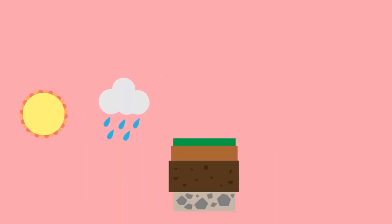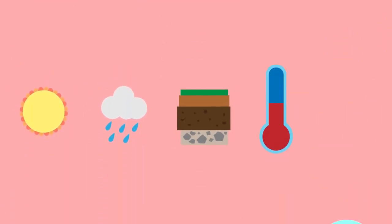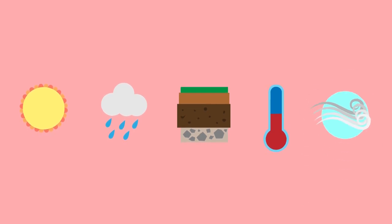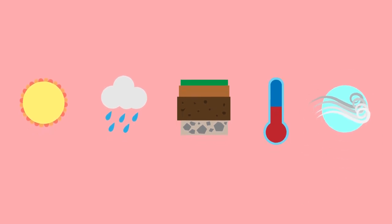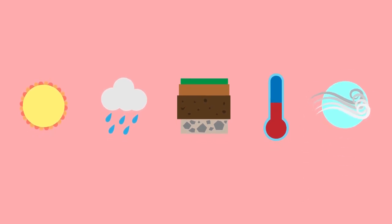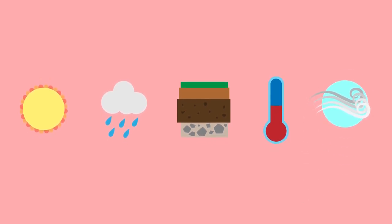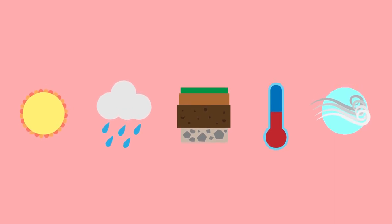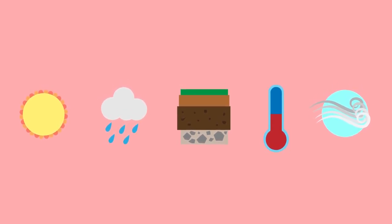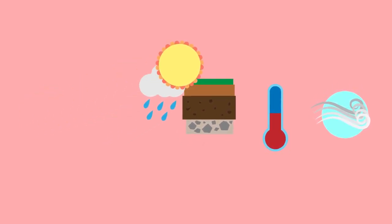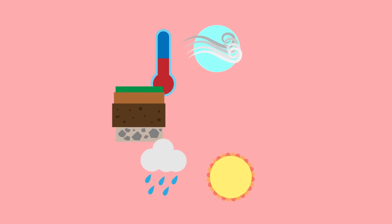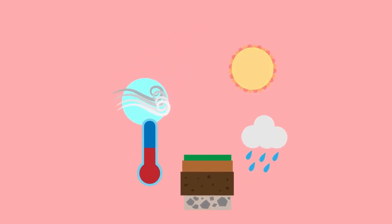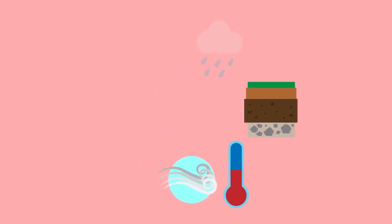Sunlight, precipitation, soil composition, temperature, and air currents are all examples of abiotic components that can be found within an ecosystem. While each of these components is important by itself, how they interact with each other also greatly influences their environment.